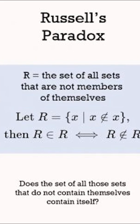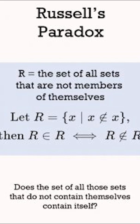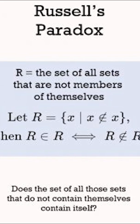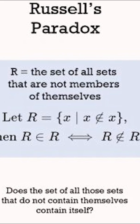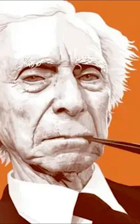Russell's discovery sent shockwaves through the mathematical world. At the time, mathematicians like Gottlob Frege were working to place all of mathematics on a logical foundation. And Russell's letter to Frege about the paradox destroyed the core of his life's work overnight. In Frege's own words, arithmetic totters.